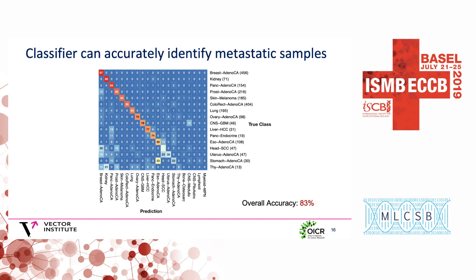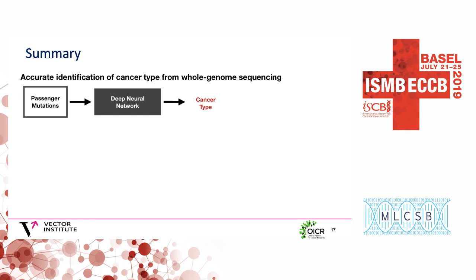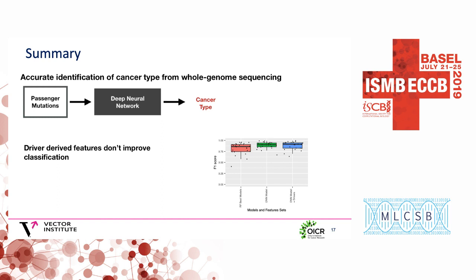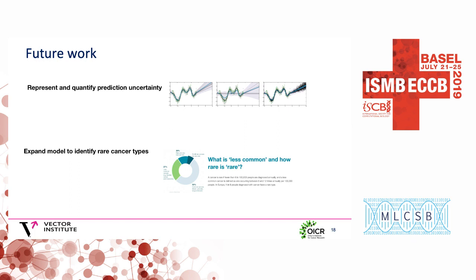To summarize, we trained a neural network based primarily on passenger somatic mutations that can accurately discriminate between 24 common cancer types. It has immediate clinical applicability in determining the primary tumor of origin for carcinomas of unknown primary, and we're exploring avenues for moving this into the clinic. An interesting side result is that adding information about driver mutations didn't improve classification performance, suggesting there's enough cell-type-specific information in passenger mutations. For future work, we want to move this into a clinical setting, which requires representing uncertainty in a principled way, so I'm exploring Bayesian deep learning methods. Additionally, the classifier only works for 24 common cancer types, and I'm working on using few-shot learning to extend this to less common cancer types.